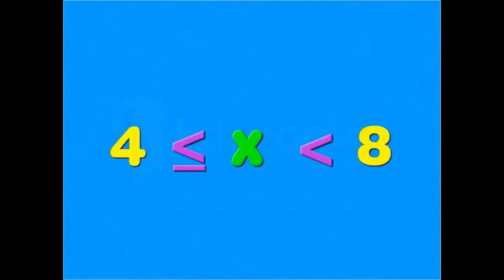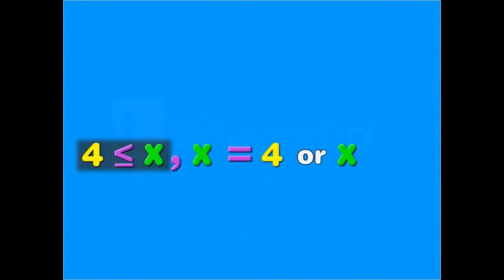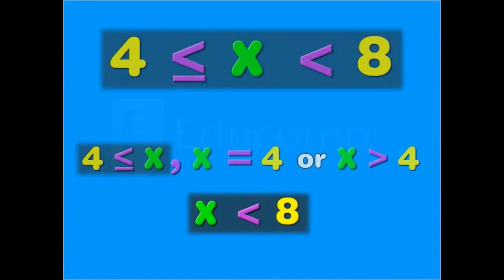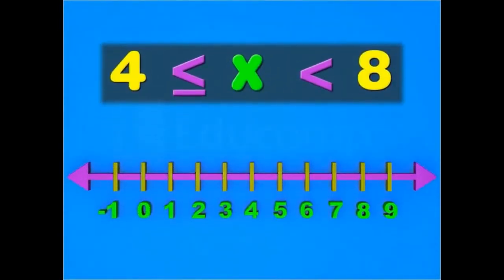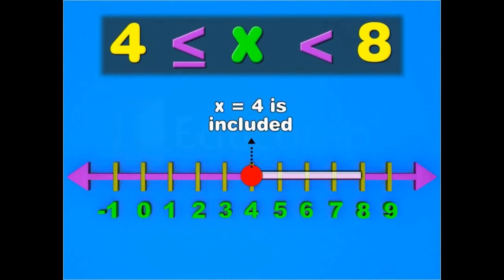Here is another inequation. It shows 2 inequations written in 1 sentence. This inequation shows that x is equal to 4 or x is greater than 4, and x is less than 8. The part of the number line that satisfies both inequations is between 4 and 8. To show this on a number line, shade the region between 4 and 8. Make a full circle on 4 to show that it has been included, and make an open circle at 8 to show that 8 has not been included.